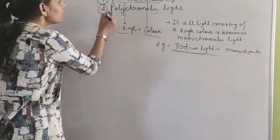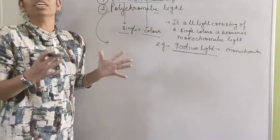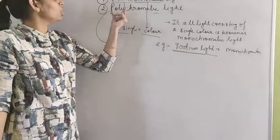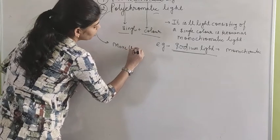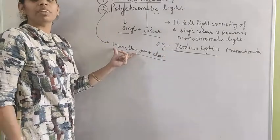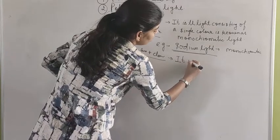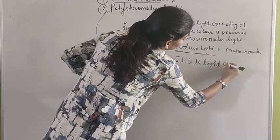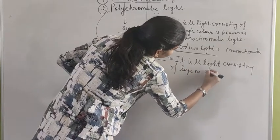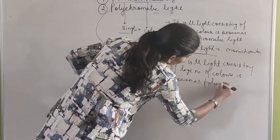Second is polychromatic light. Poly means many — more than one. So polychromatic light is the light consisting of a large number of colours — for example, red, green, and blue all together. Light which has more than one colour is known as polychromatic light.